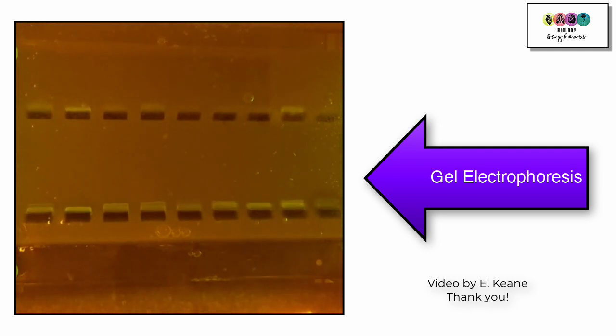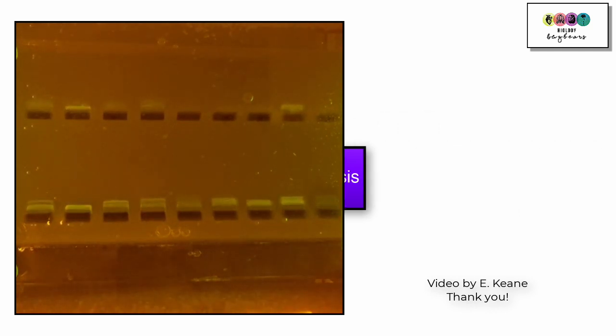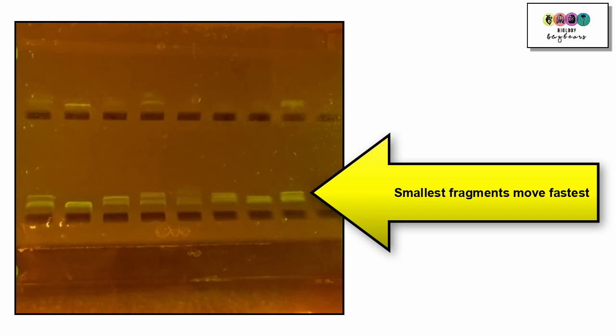So this is a gel which has an electric current running through it. The samples are loaded into these wells and the smallest fragments move fastest.